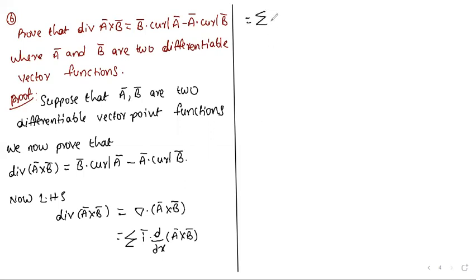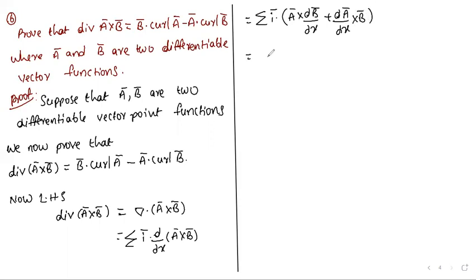Applying the UV product rule: equals summation of i-bar·[Ā cross ∂B̄/∂x plus ∂Ā/∂x cross B̄]. Splitting the summation: summation of i-bar·(Ā cross ∂B̄/∂x) plus summation of i-bar·(∂Ā/∂x cross B̄).